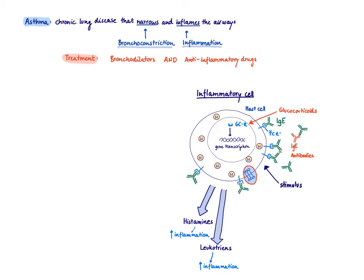What are other options to stabilize the mast cell or prevent degranulation? Once there is a stimulus, the mast cell can degranulate and produce histamines and leukotrienes. A key stimulus is allergens: allergens lead to production of IgE, and once IgE binds to its receptor — the Fc-epsilon receptor — they can crosslink, triggering mast cell degranulation. We have drugs that prevent IgE from binding to the Fc-epsilon receptor: anti-IgE drugs. The only one on the market is omalizumab, a monoclonal antibody that binds to IgE, making it less likely to bind to the Fc-epsilon receptor, resulting in less degranulation and less production of histamines and leukotrienes.